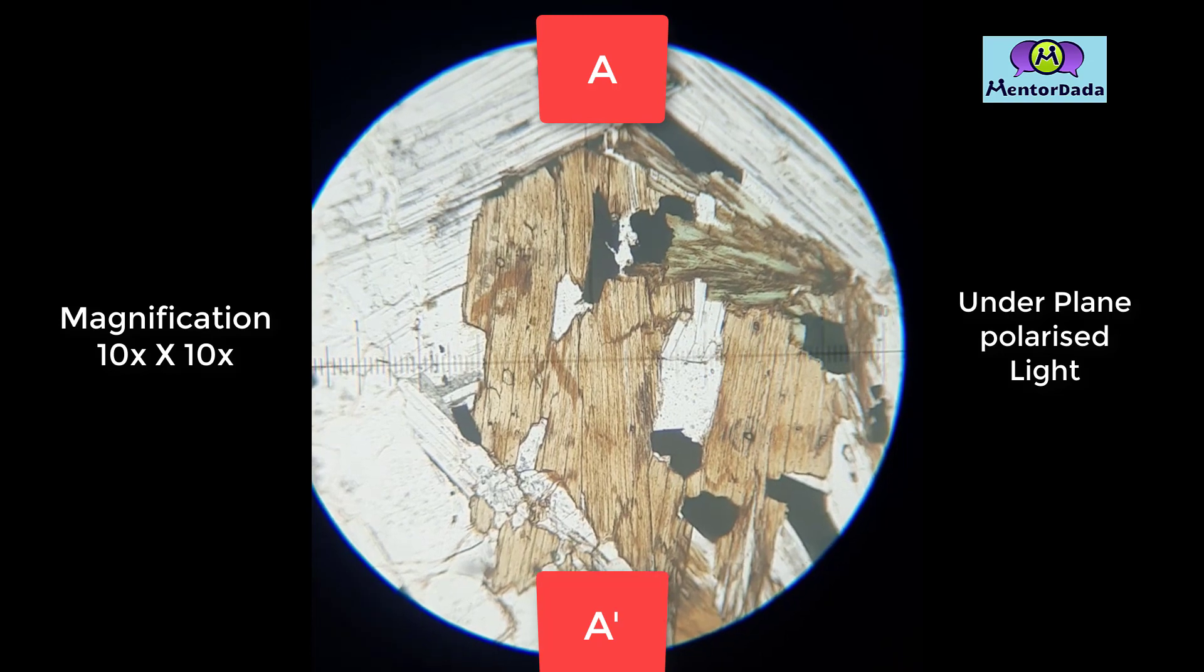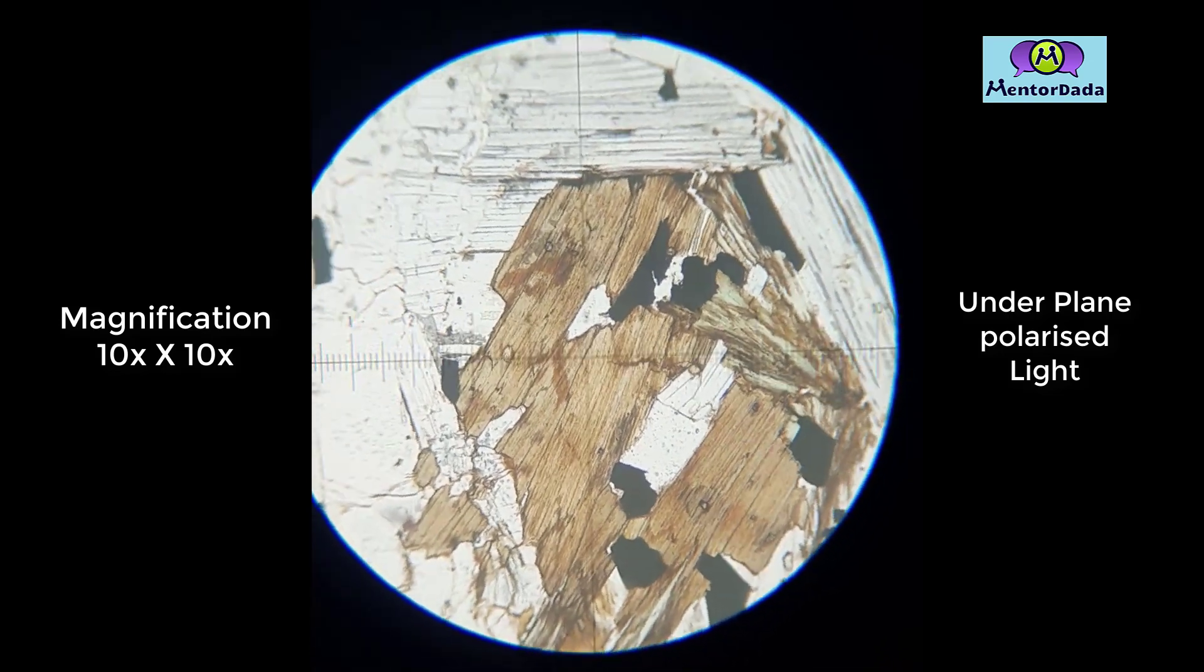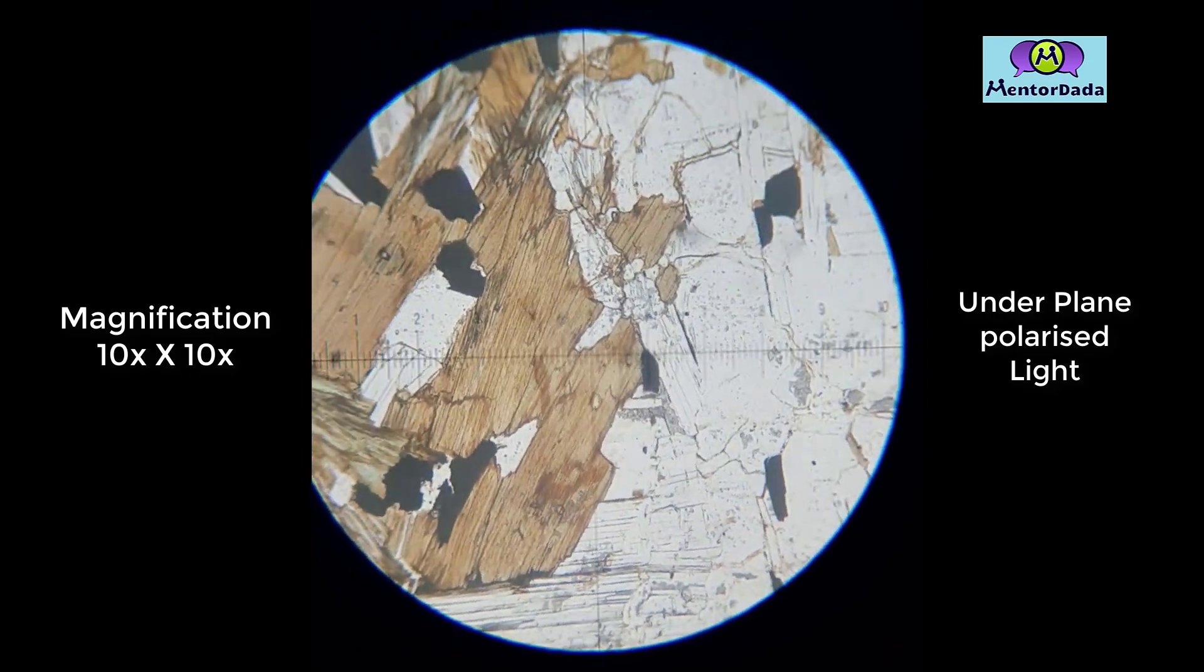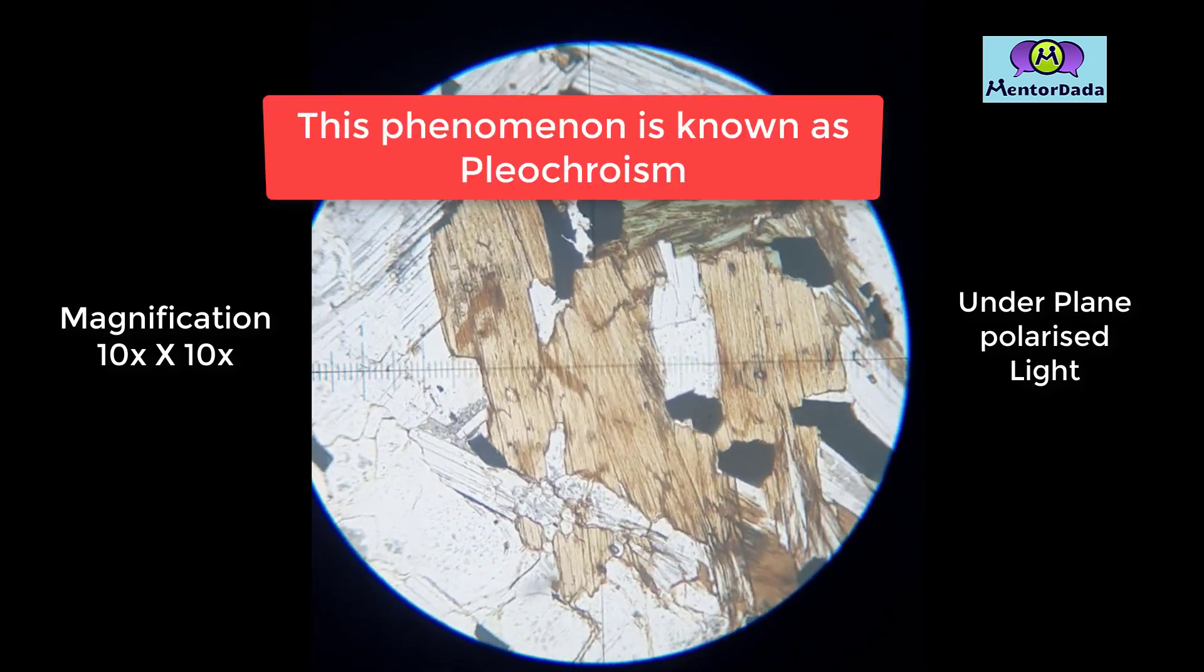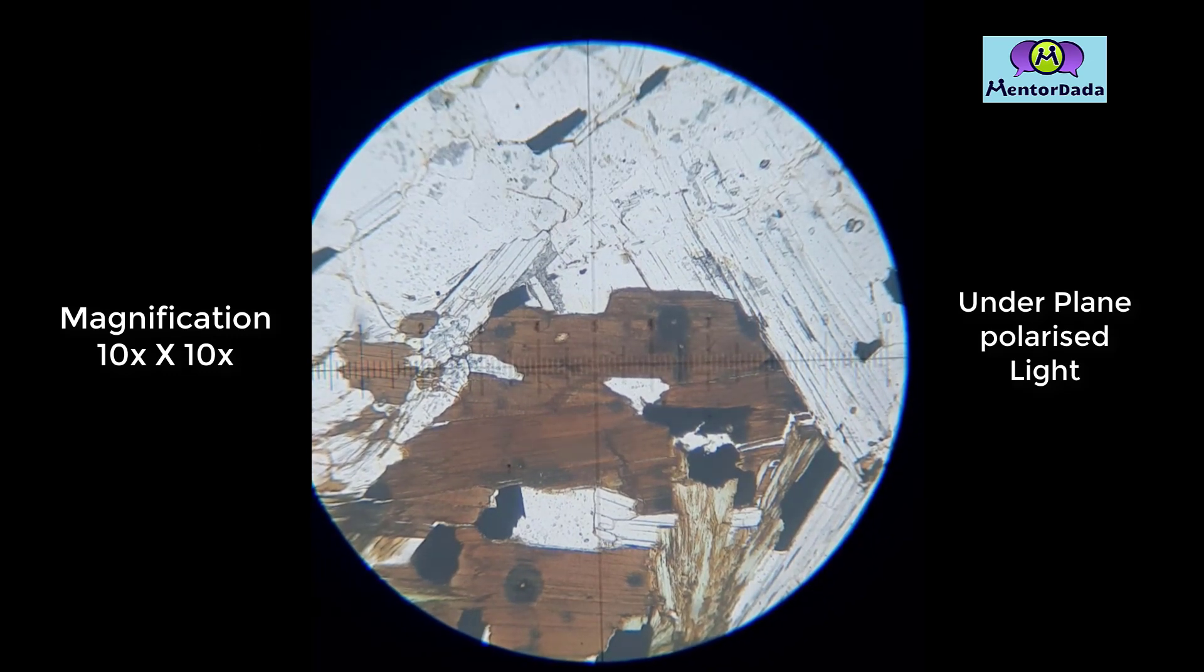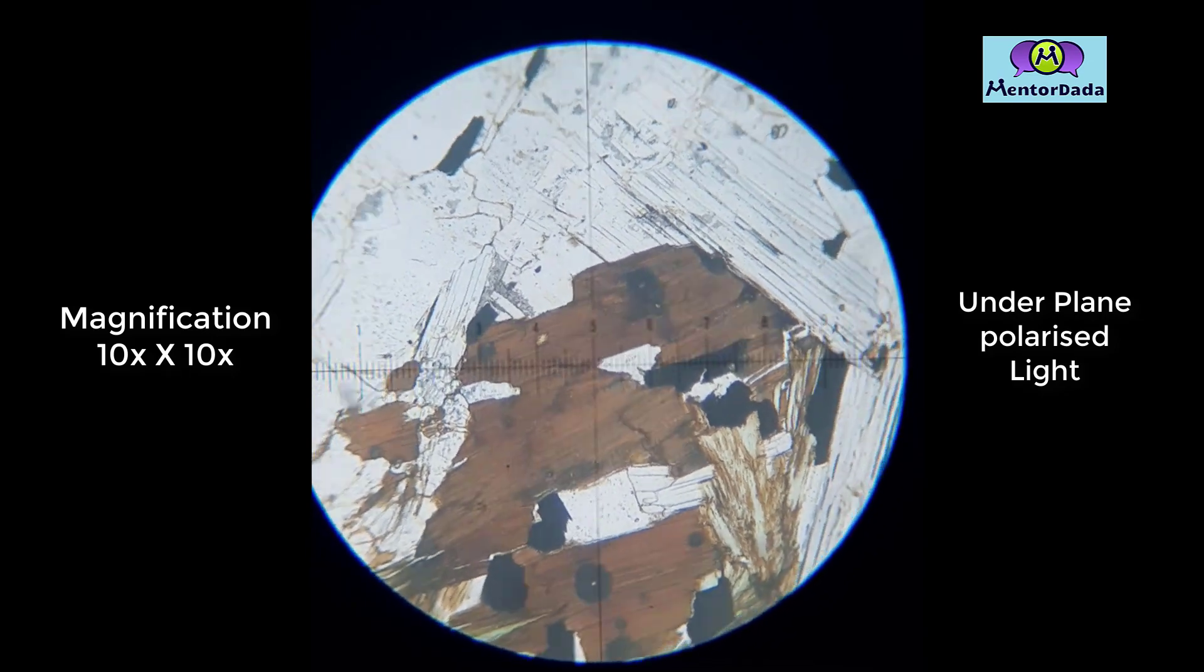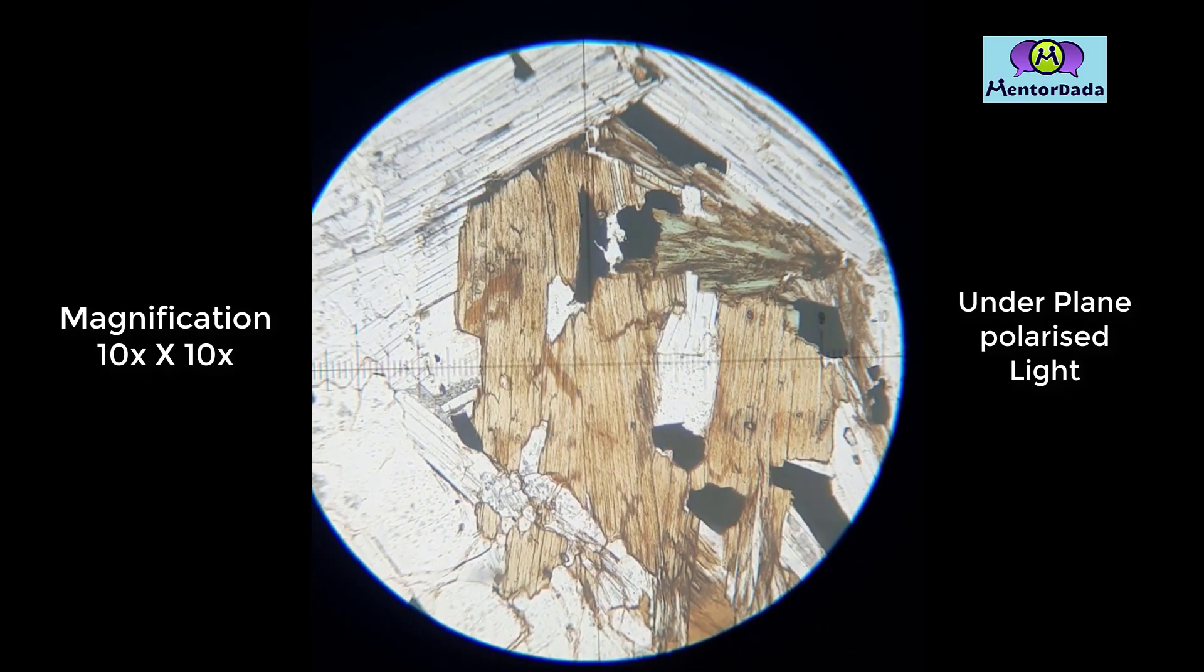Let's observe the mineral and its optical properties. While we rotate this stage, we can observe a certain change in color under plane polarized light from light yellow to dark brown. The dark brown is typically observed along p p dash, while light yellow color is observed along the analyzer direction, that is a a dash.